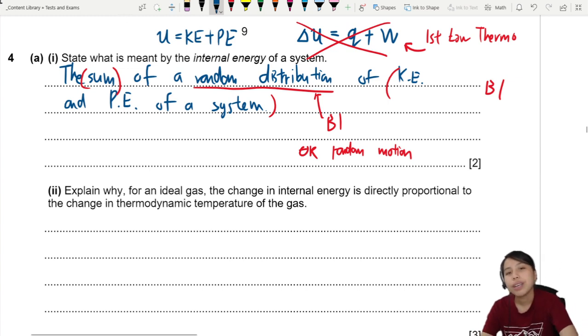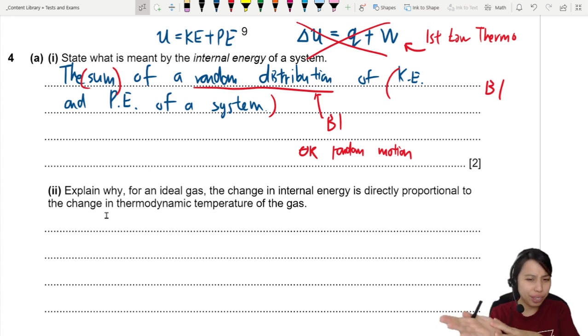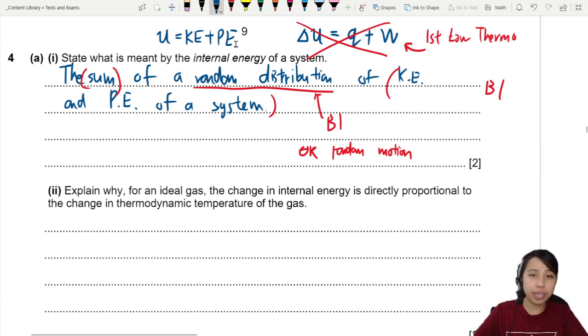Now we go to part two. So if part one asked about internal energy, part two is probably related to this equation up here. Explain why for an ideal gas, the change in internal energy is directly proportional to change in thermodynamic temperature. How do we link together internal energy to temperature? Okay, never mind. We will slow down. Let's go back to our U equals to KE plus PE first. If this is an ideal gas, we can throw away our potential energy. Did they say it's an ideal gas? Yes, they did. Right here. Ideal gas. Ideal gas means there is no intermolecular forces, so no potential energy. So maybe I'm going to start explaining that first.